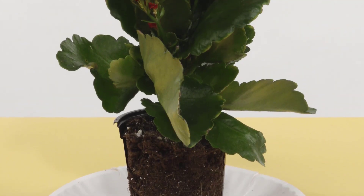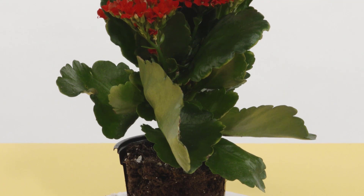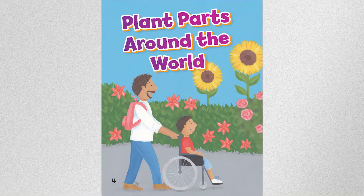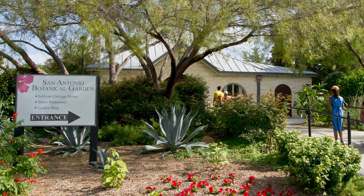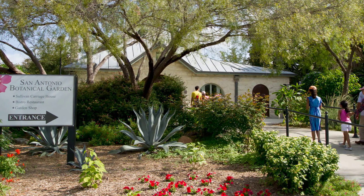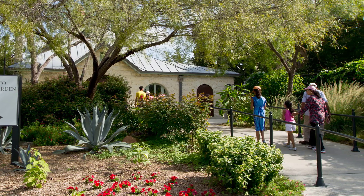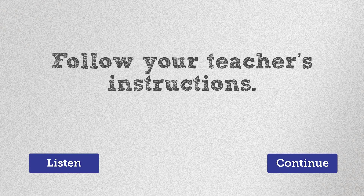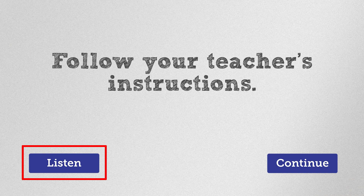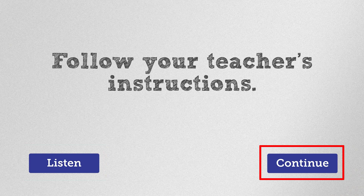So far in this lesson, you've looked at pictures of trees and observed the different parts of a plant. Next, you'll listen to a story about a boy named Marco who visits a botanical garden. A botanical garden is kind of like a museum for plants — you can see all sorts of different plants and flowers on display. Follow your teacher's instructions. To begin the story, "Plant Parts Around the World," select Listen. To skip the story and move on, select Continue.